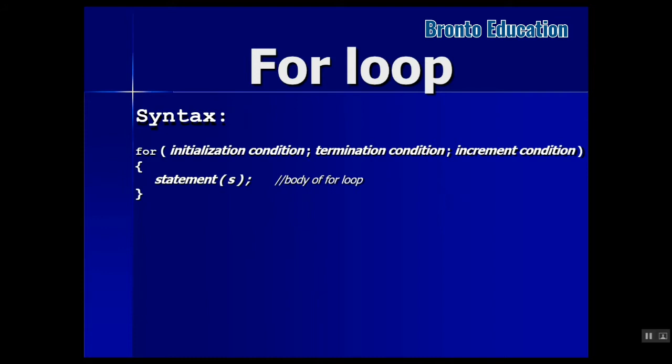Inside the parentheses we initialize a variable and give it a value — for example, we say i equals 1, meaning i starts from 1. Then we give a termination condition, the same kind of condition we used in if statements and while loops. The last part is the increment, which we used to write inside the while loop and do-while loop, but here we write it in the parentheses. Then we write our statements inside the block.